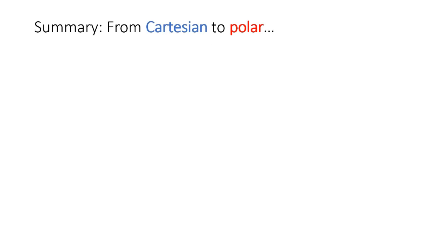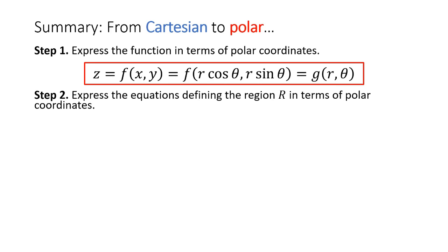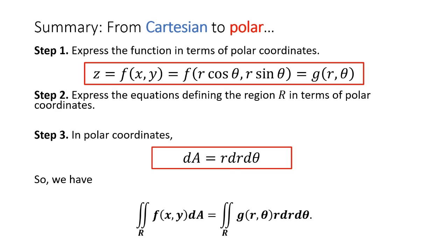For the summary of this lecture: to convert the double integral in Cartesian coordinates to a double integral in polar coordinates, first express the function in terms of polar coordinates. Then express the equations defining the region R in terms of polar coordinates using the conversions we learned. And lastly, change dA to r dr dθ, giving us the double integral form shown.